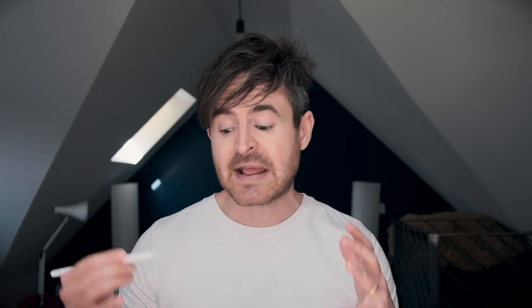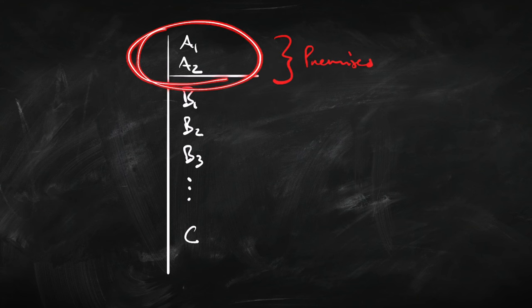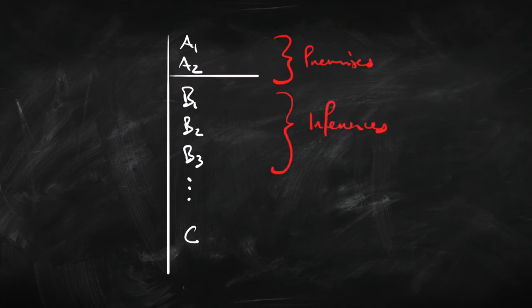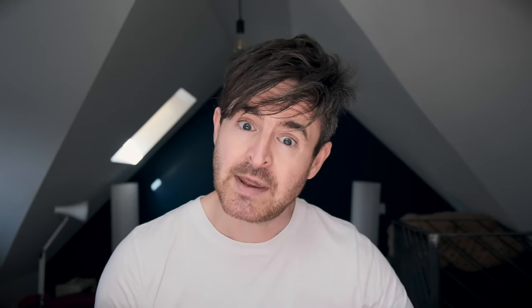We are going to set out our proofs so that they look like this. We are going to have premises written at the top of the page, with a line underneath them. Then we're going to make various inferences from those premises, carrying on in accordance with the rules. And at the bottom, we're going to have our conclusion.